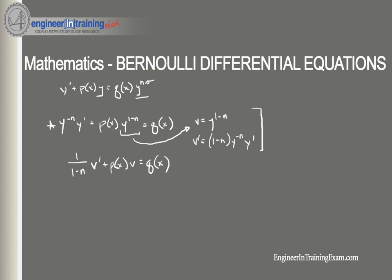Once we solve for v, we plug back in our substitution y to the 1 minus n. That's essentially the steps to solving a Bernoulli differential equation — get it into a form where we substitute, plug into the original equation to get a linear differential equation, solve using our normal process, and then resubstitute our values.